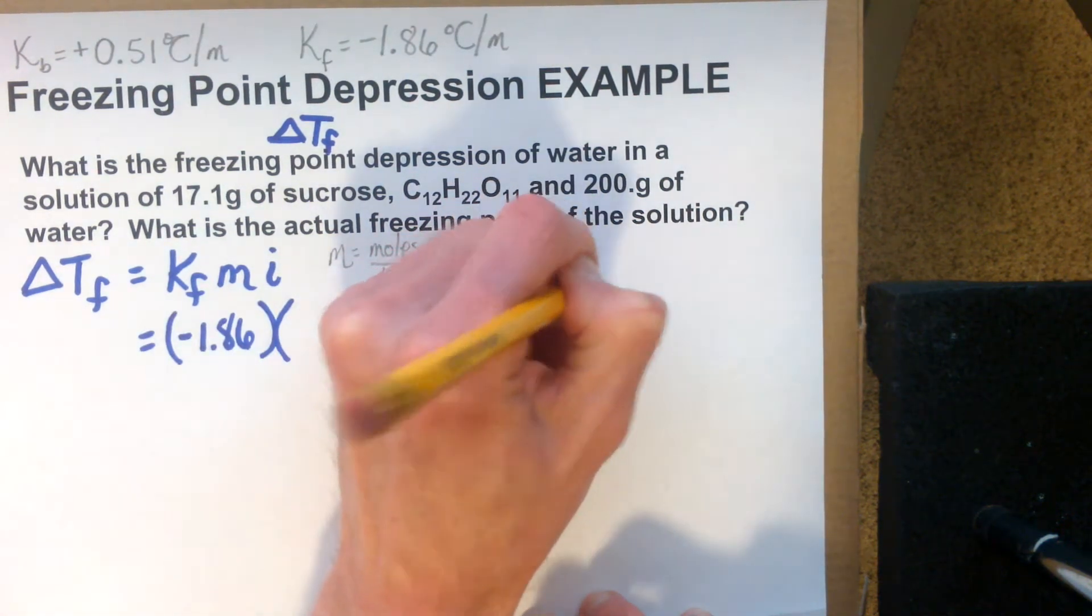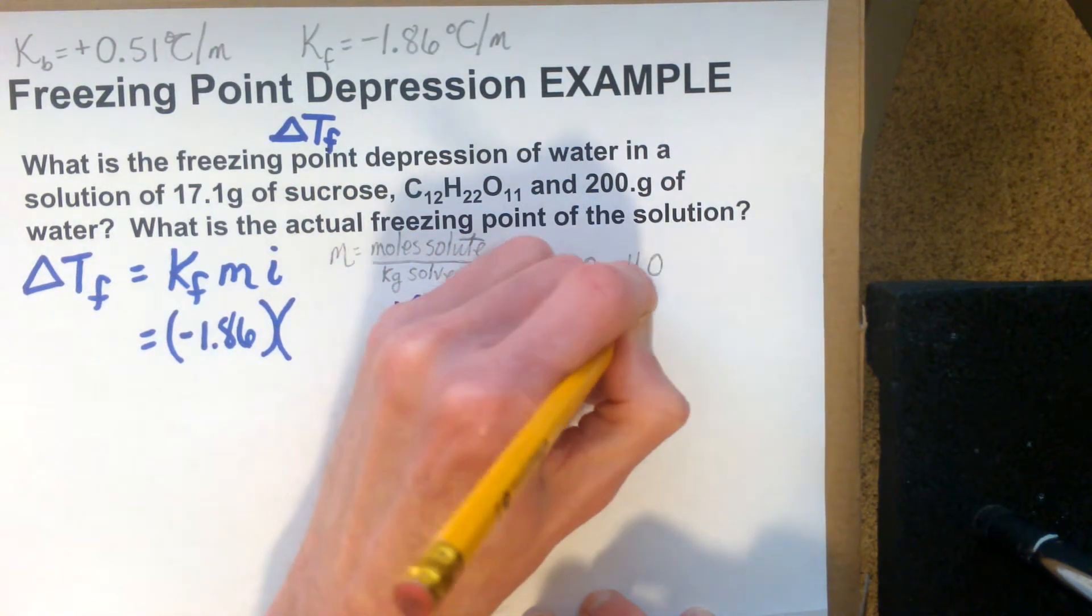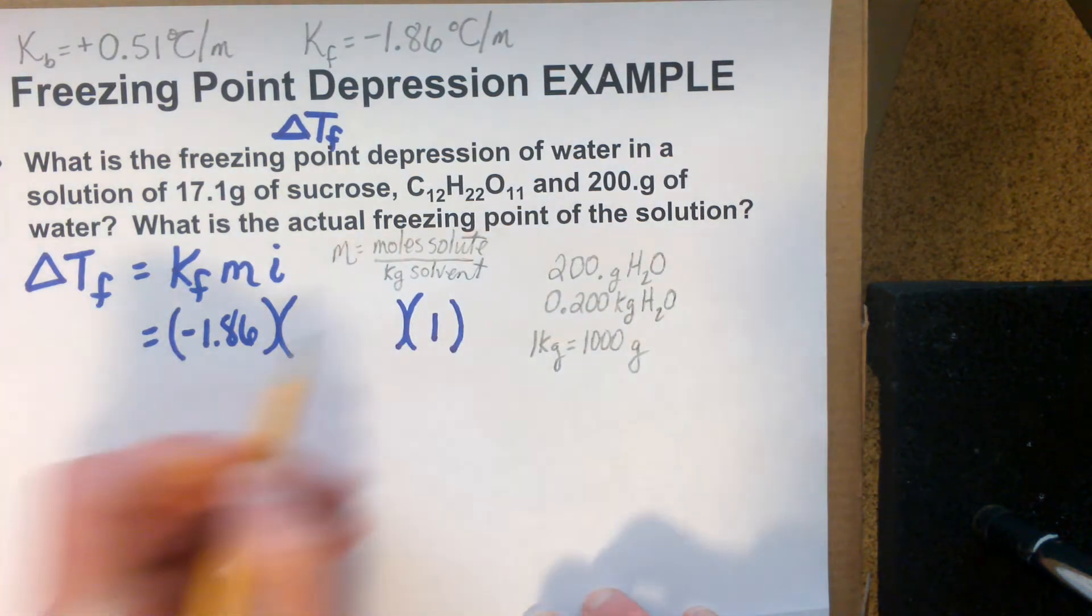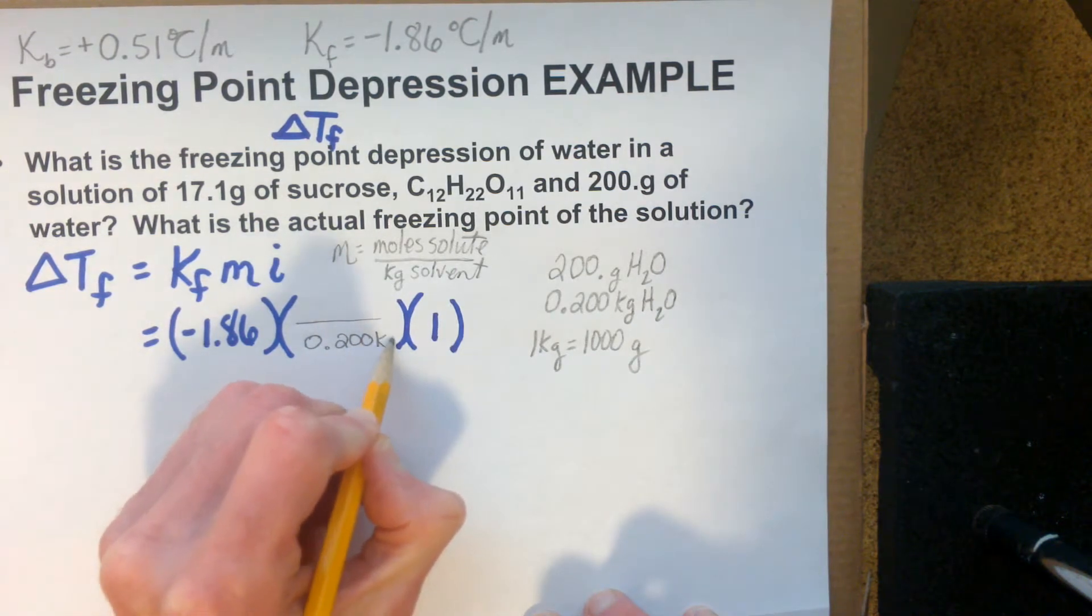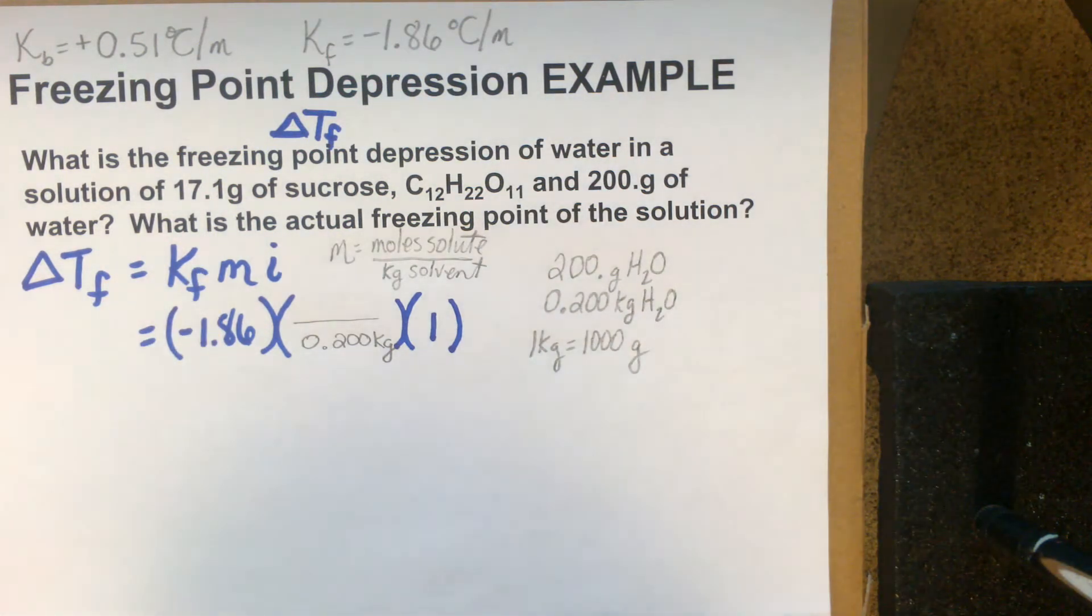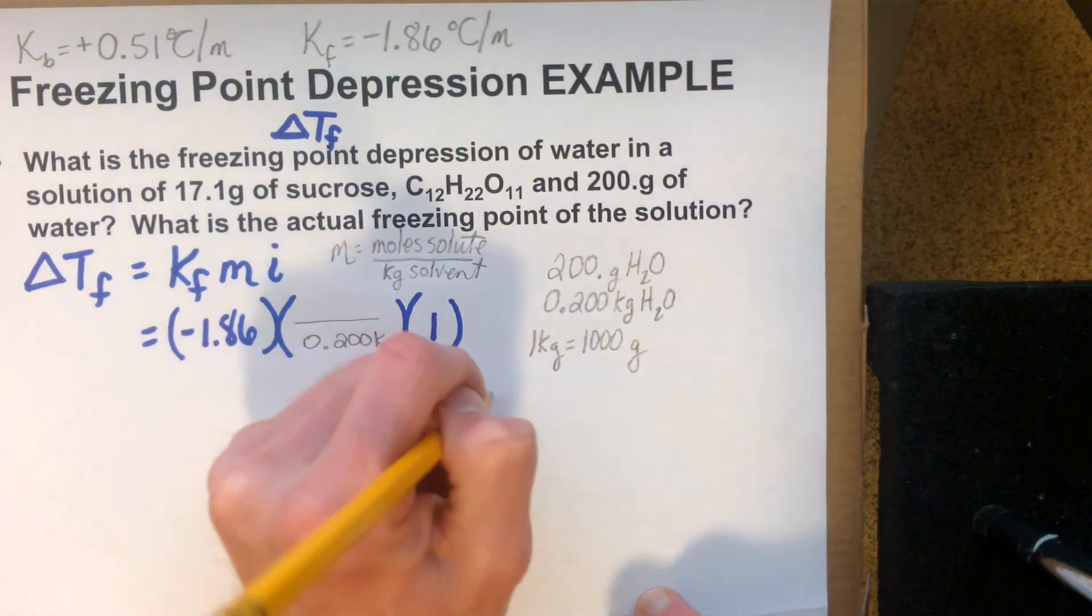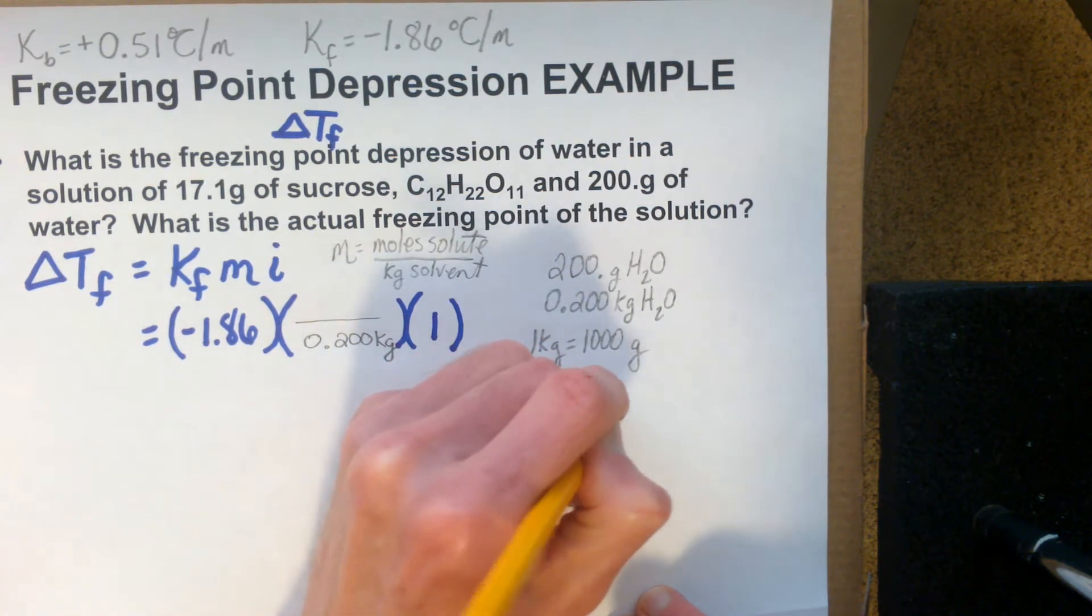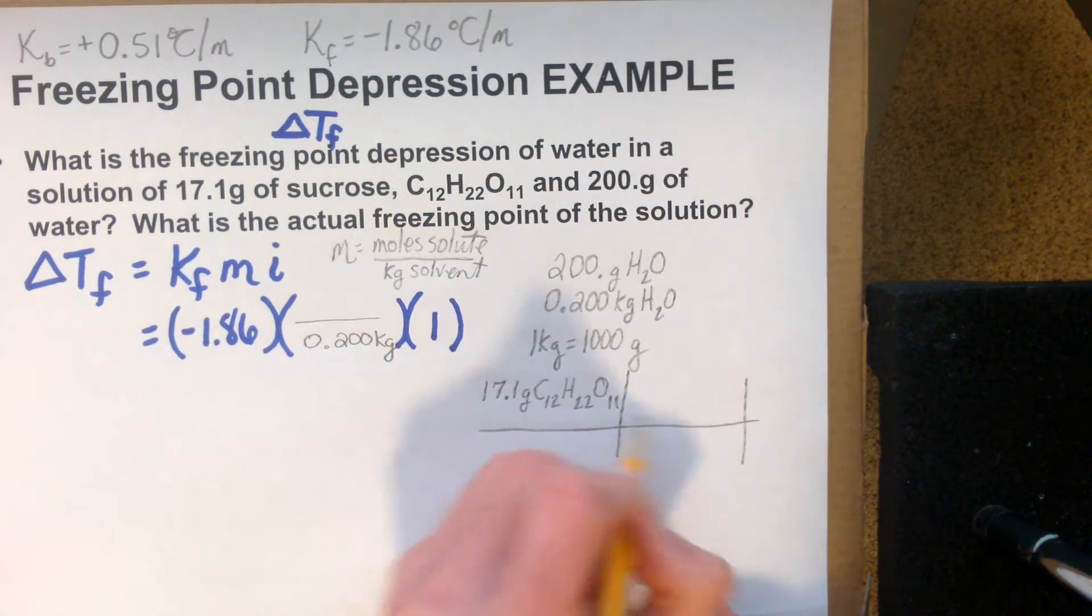Molality equals moles of solute, in our case sucrose, per kilogram of solvent. We've got water as our solvent. We need to get the molality value, then we can solve our formula. 200 grams of water is equal to 0.2 kilograms of water. Just a reminder on metric conversions: one kilogram equals 1,000 grams. Let's go ahead and put that in: 0.2 kilograms. That's our solvent, water. Sucrose is our dissolving substance, the solute. We need to get the moles of solute. Let's take 17.1 grams of sucrose, C12H22O11.